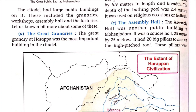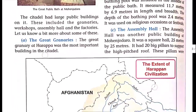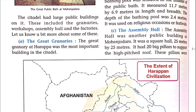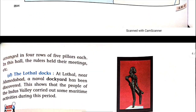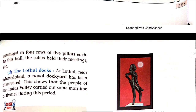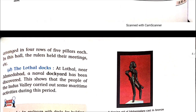Third: The Assembly Hall — another public building at Mohenjo-daro। यह एक square hall था — 25 meters long और 25 meters wide। It had 20 big pillars to support the high-pitched roof — arranged in four rows of five pillars each। In this hall, the rulers held their meetings।